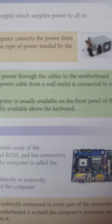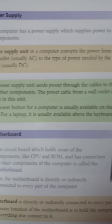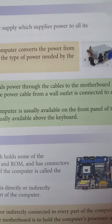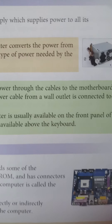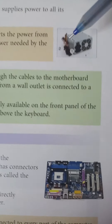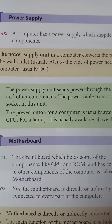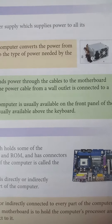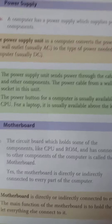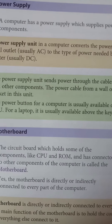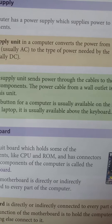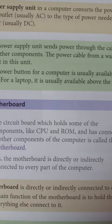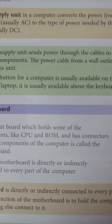The power cable from your wall outlet is connected to the circuit in this unit — the outlet means AC, which is connected to the circuit. The power button for your computer is usually available on the front panel of the CPU. For a laptop, it is usually available above the keyboard.